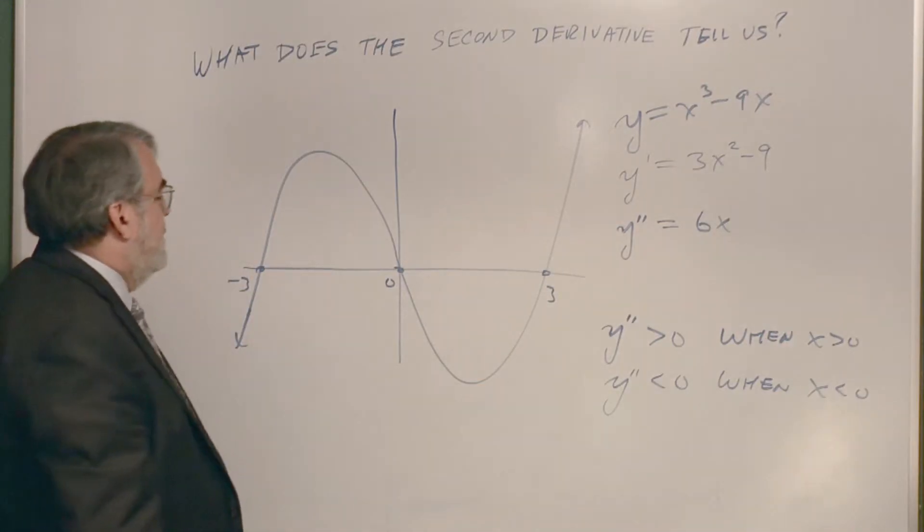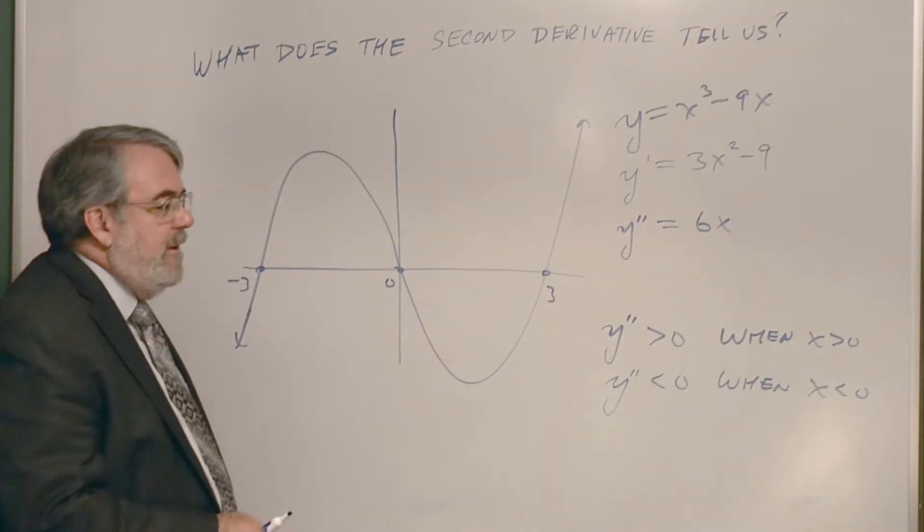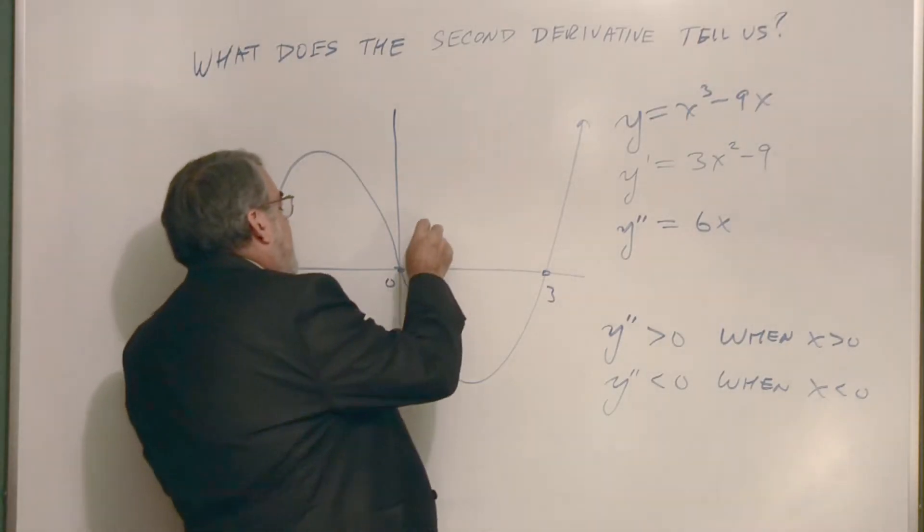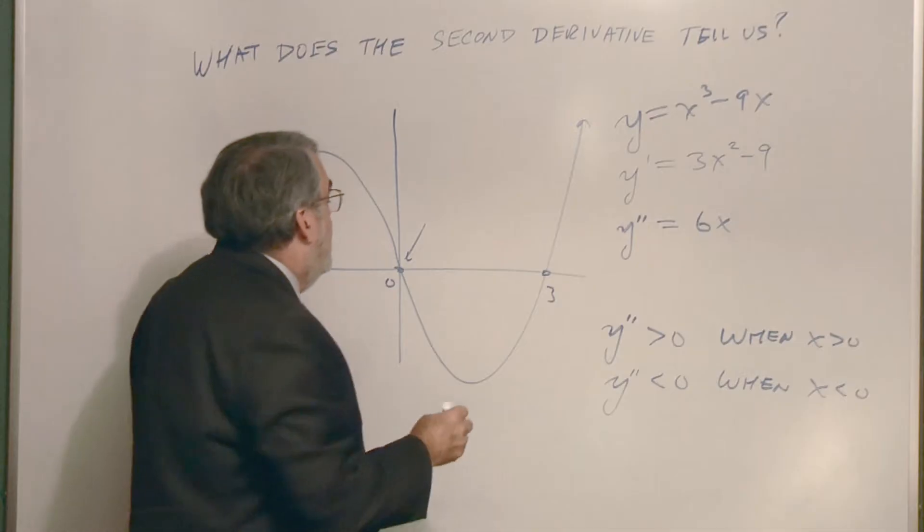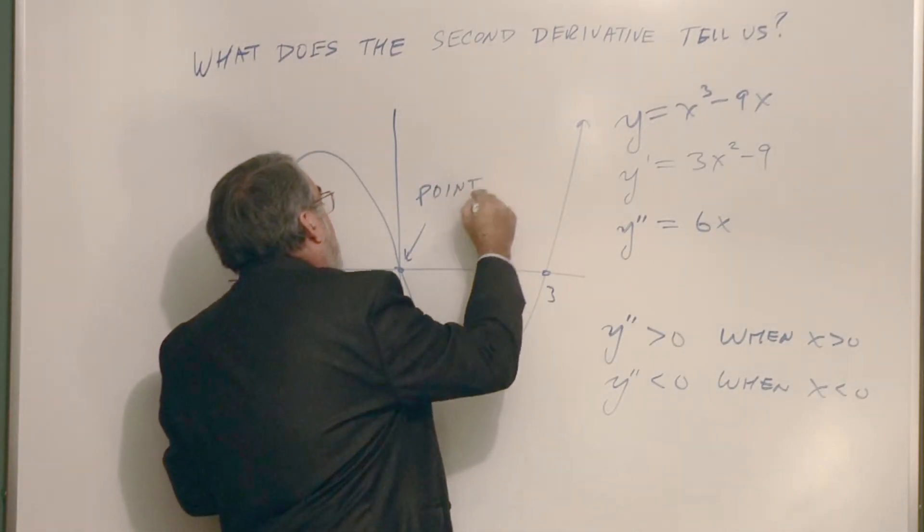Isn't that wonderful? Well, that concavity changes right there at this point. And this point, which is going to be the origin on this graph, is called the point of inflection.